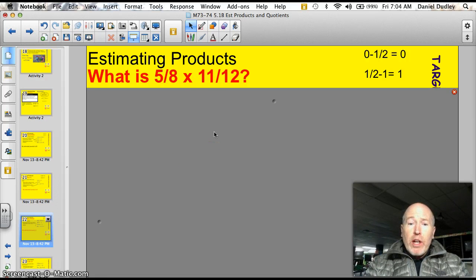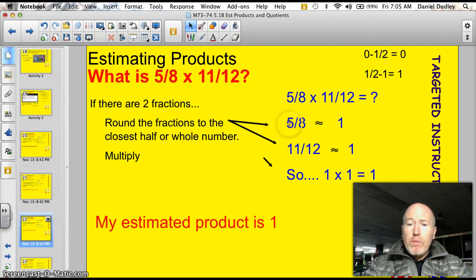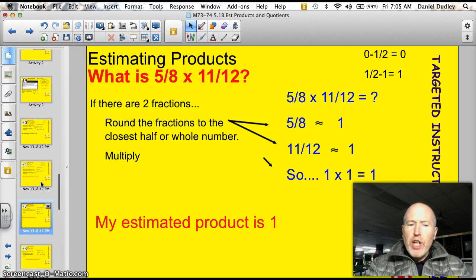How about this one here? Try this one on your own. 5 eighths times 11 twelfths. Please pause it and try it. Let's see how you did. Well, I said that 5 eighths is about 1, because it's bigger than 1 half. And 11 twelfths is way bigger than 1 half, so that's about 1. So, 1 times 1 equals 1. Right. I'm just going to go double check up here. 5 eighths, 1 times 1. Yeah. That works. My estimated product is 1. I forgot to stress the check on those other slides, but that's important.